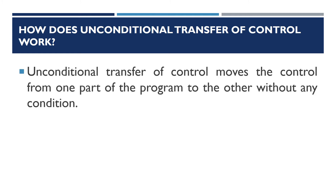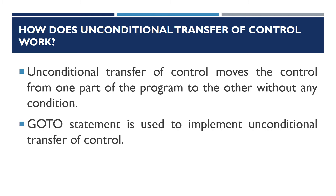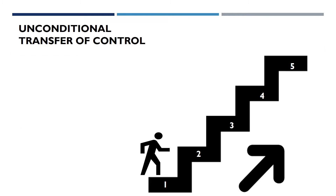Unconditional transfer of control moves the control from one part of the program to another without any condition. The GOTO statement is used to implement unconditional transfer of control. Let's check out an example of unconditional transfer of control.